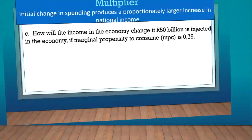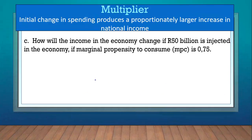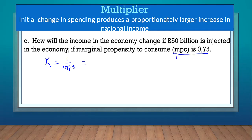How will income in the economy change if 50 billion rand is injected into the economy, given the marginal propensity to consume is 0.75? First, calculate the multiplier: K = 1 over MPS. MPC is 0.75, so MPS = 0.25. Therefore K = 1 over 0.25. You always calculate the multiplier first before determining how the 50 billion will multiply.